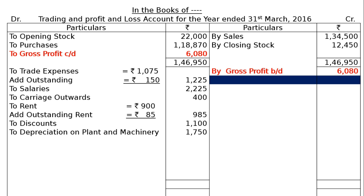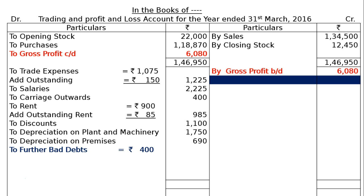To Depreciation on Plant and Machinery: the adjustment states depreciation at 10 percent, so 10 percent of rupees 17,500 equals rupees 1,750. Depreciation on Business Premises at 2 percent: 2 percent of rupees 34,500 (the premises amount given) equals rupees 690. Next we address bad debts as given in the adjustment.